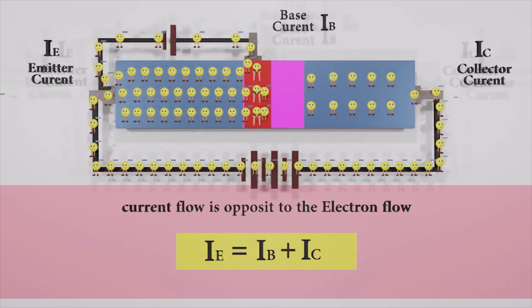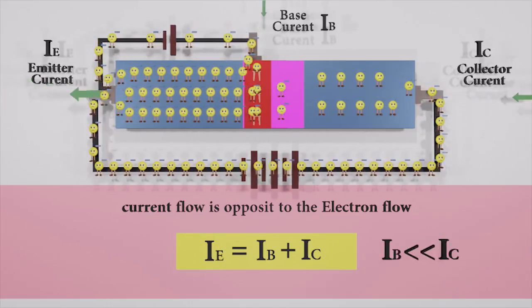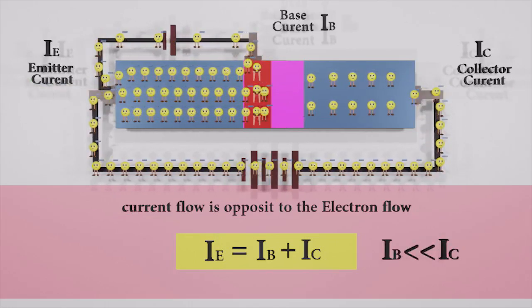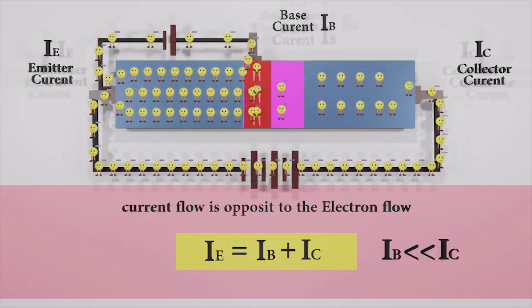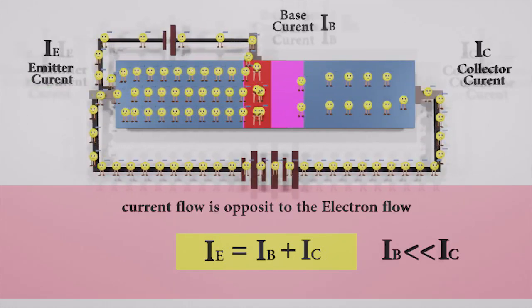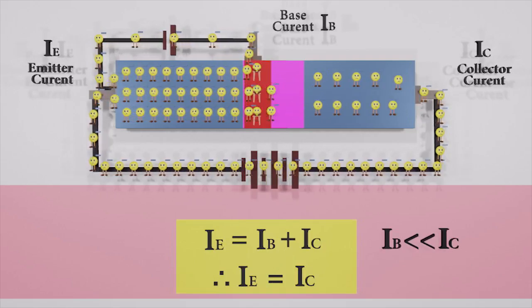But compared to the IC, the IB current is very low and negligible. So we can assume IB is equal to 0, and the IE is almost equal to the IC.